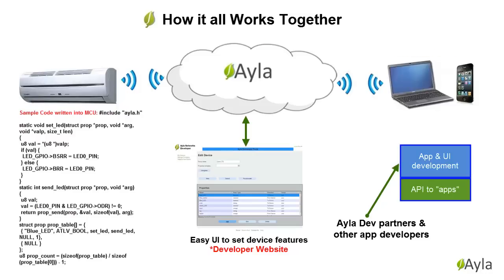With our mobile libraries, mobile applications can be easily created to communicate with our device service, allowing you to control the device from anywhere in the world with the touch of a finger. After writing code into the host MCU and creating a property via our developer website, you can use our mobile libraries that are offered both in iOS and Android to extend your service even further.